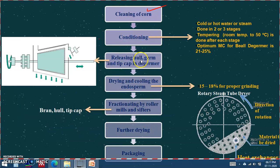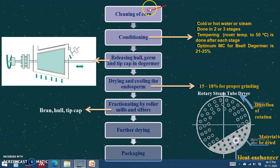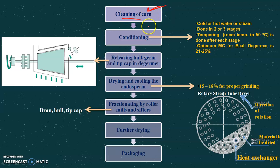First of all, the grain is cleaned to ensure the quality of the end product and to prevent damage to the unit operations. Different cleaners are used — for example, magnetic separators, disc trieurs, sieves, etc. After cleaning, the grains are conditioned. Conditioning is done either by cold water, hot water, or by steam.